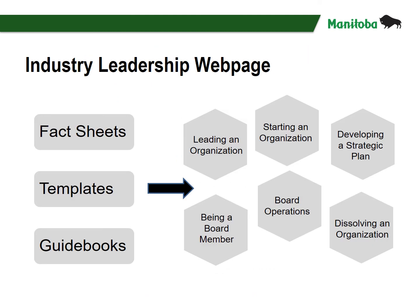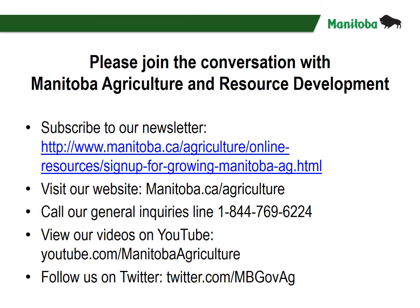The website contains a wealth of information related to leading an organization, starting an organization, developing a strategic plan, being a board member, board operations, and dissolving an organization. The resources section also contains a number of tools and links. Please join the conversation with Manitoba Agriculture and Resource Development — subscribe to our newsletter, visit our website at manitoba.ca/agriculture, call our general inquiries line at 1-844-769-6224, view our videos on YouTube, and follow us on Twitter.